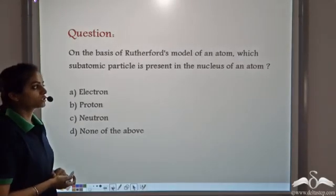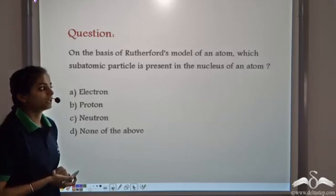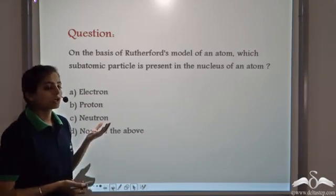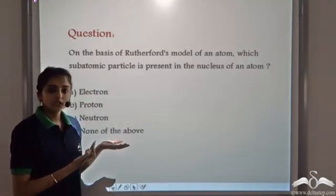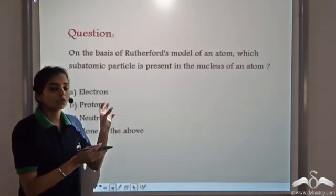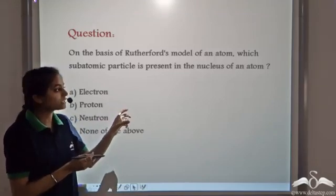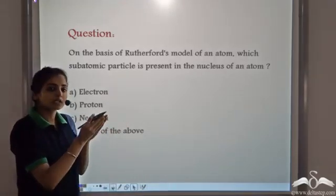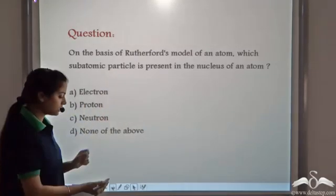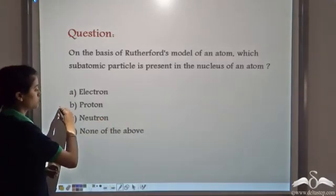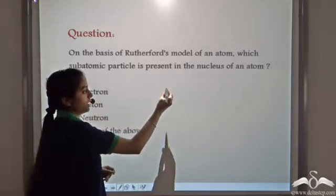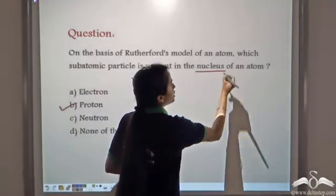On the basis of Rutherford's model of the atom, which subatomic particle is present in the nucleus? According to Rutherford, the atom contains a large empty space and the entire mass and positive charge is concentrated in the central part — the nucleus. Since the entire positive charge is concentrated in the nucleus, the subatomic particle present in the nucleus is the proton. All protons are concentrated in this central part known as the nucleus of the atom.